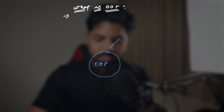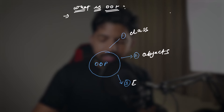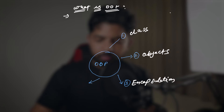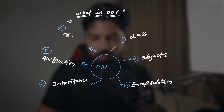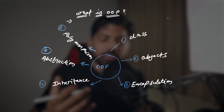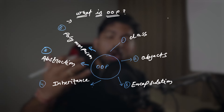The question is: what is object-oriented programming? Simply, it organizes our program as objects. The main concepts in OOP are: class, objects, encapsulation, inheritance, abstraction, and polymorphism. We will be learning each concept one by one.